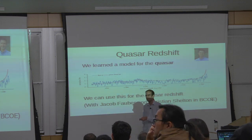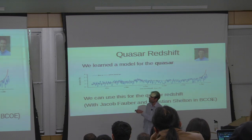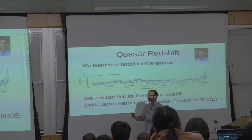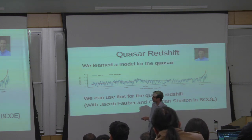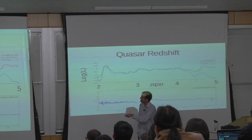This is a project with Christian Shelton and Jacob Fauber in CS. I don't have a picture of Jacob, so you get a picture of the professor instead. Here's an example of how well it works: this is the rest frame quasar spectrum, and this is the posterior probability of the quasar having a redshift — pretty flat, and then a huge peak here.